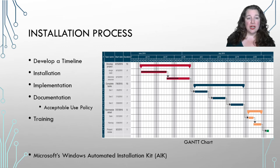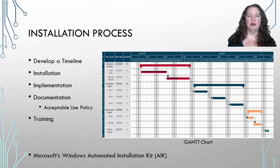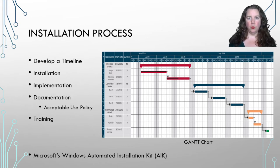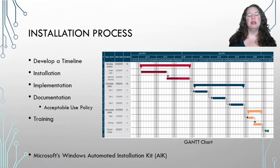When you develop your timeline, get together a team — sometimes you can do it all yourself depending on how big the network is. Think about how you're going to do the installation and how long it will take. Do you need to order parts or do you already have them? Once you have the parts, implement any software changes needed. Installation means putting the hardware in place; implementation means making sure all the software is in place as well.